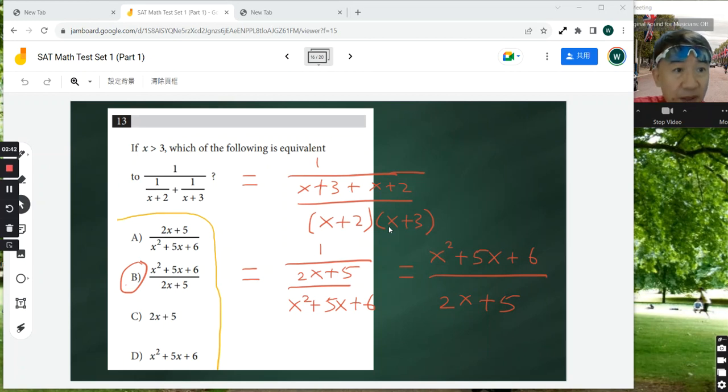Applying the FOIL method, they are going to be x squared plus 5x plus 6.